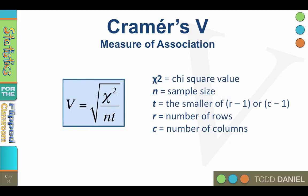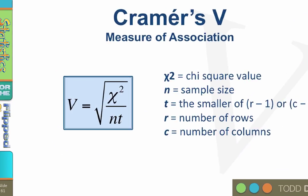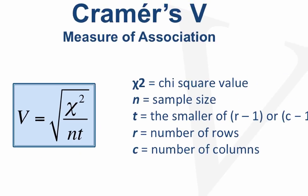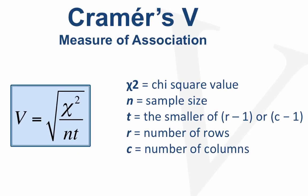The formula for Cramer's V is the square root of chi-square divided by n times t, where n equals sample size, and t equals the smaller of r-1 or c-1, where r equals the number of rows and c equals the number of columns.